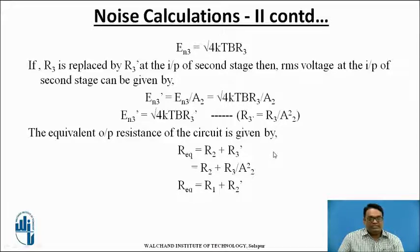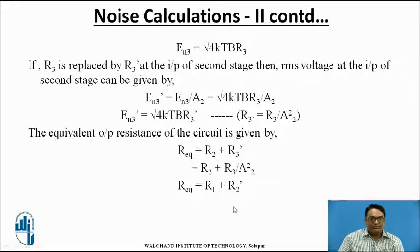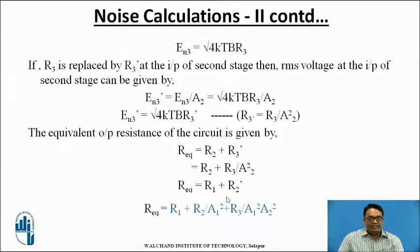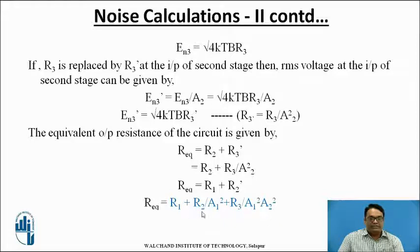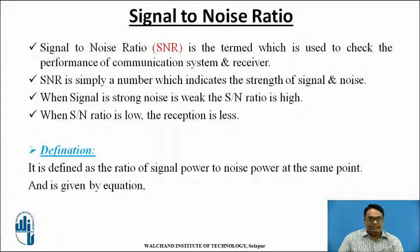The equivalent output resistance of the circuit is REQ = R2 + R3', giving R2 + R3/A2². The total equivalent resistance for the circuit is R_eq = R1 + R2/A1² + R3/(A1² × A2²), where A1 and A2 are the gains of amplifier 1 and amplifier 2.